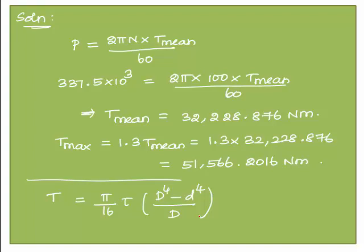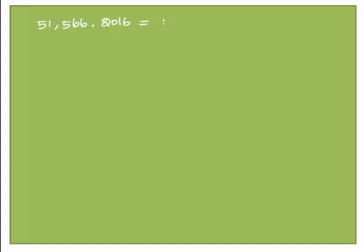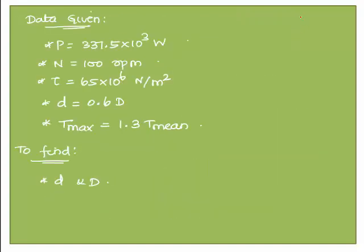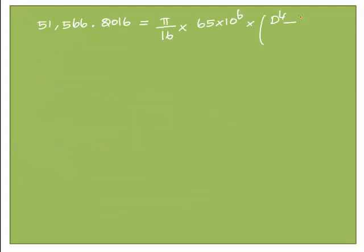We design the shaft based on the maximum torque. Setting T_max = 51,566.2016 newton meter equal to (π/16) × τ, where τ = 65 × 10⁶. Since d = 0.6D, we replace small d with 0.6 × capital D, so the expression becomes (π/16) × 65 × 10⁶ × (D⁴ − (0.6D)⁴) / D.